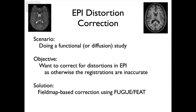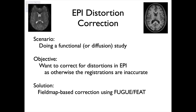When we've got a functional image, or a diffusion EPI image, and we want to register that to our structural image and then ultimately to standard space, we've got a few more problems than we would have with a structural-to-standard or structural-to-structural registration. That's because EPIs have distortions and signal loss which we need to correct for, and that's what EPI distortion correction is all about.